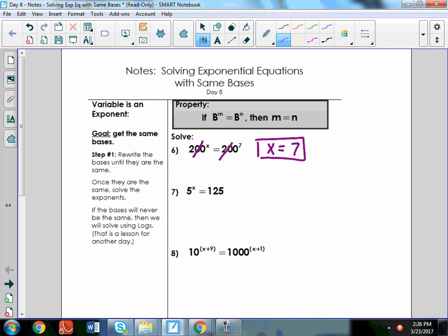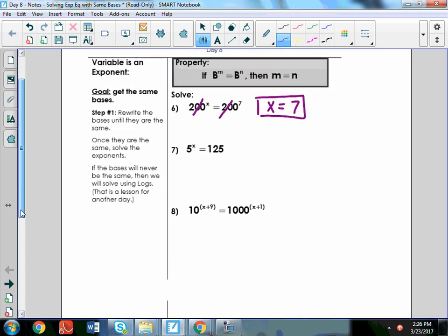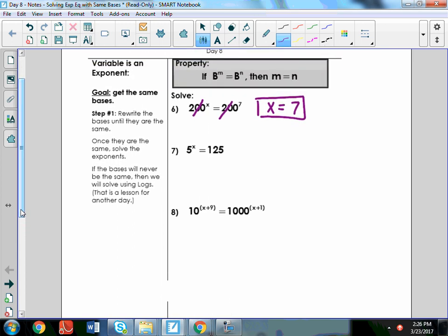So, sometimes, when the bases aren't the same, we have to rewrite the problem in a way to make them the same. So, on example 7, it says 5 to the power of x equals 125. Well, the base of this is 5, but I have to try to rewrite the number 125 with a base of 5, so I will have the same basis. So, if you take 5 and multiply it by itself, what power would it be so that it would equal 125?